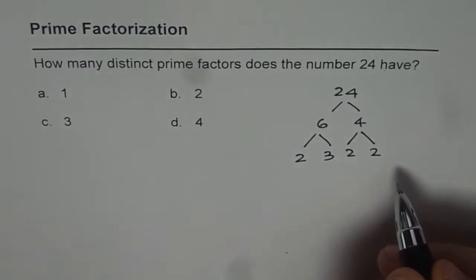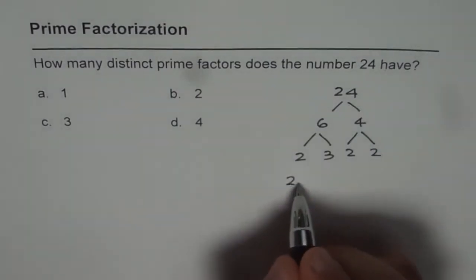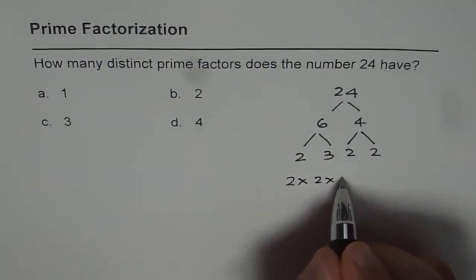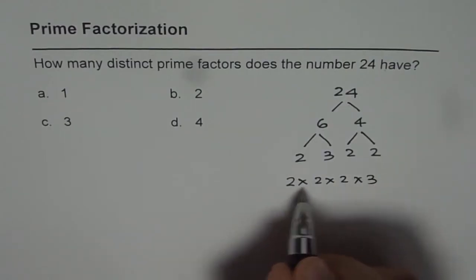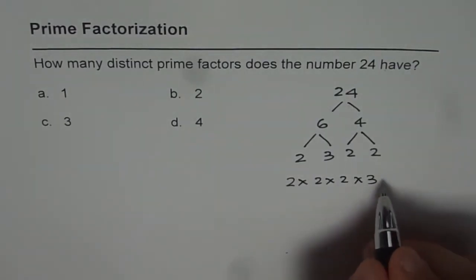So that gives us prime factorization and we know 2 times 2 times 2 times 3 are the set of prime factors for 24. When you multiply them you get 24.